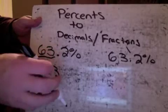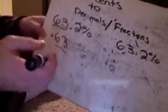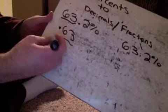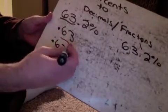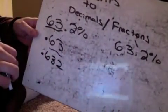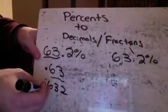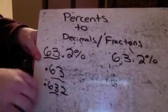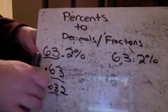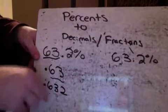Now, technically, since we have this 0.2% at the end of it, we probably should write the decimal 0.632. Which would be fine. That would still be 63%, but then we'd have that added extra 0.2 at the end. So either of these would be okay.